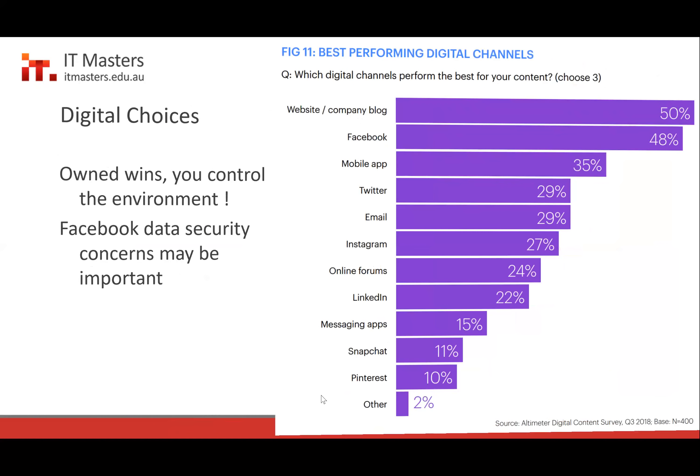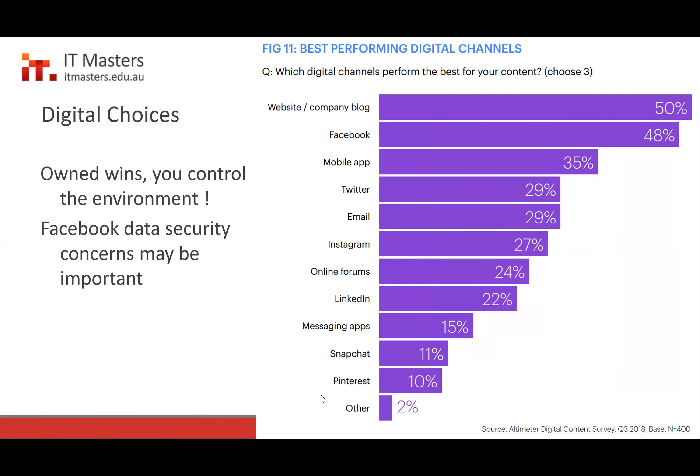Which digital channels perform best for your content? From Altimeter research: a company website or blog is at the top — people trust and can measure it using Google Analytics. Facebook has great analytics too. Mobile apps are also high because you own the content and control how it works. As you go down the list toward less common channels, they're less adopted but still important for reaching certain target audiences.